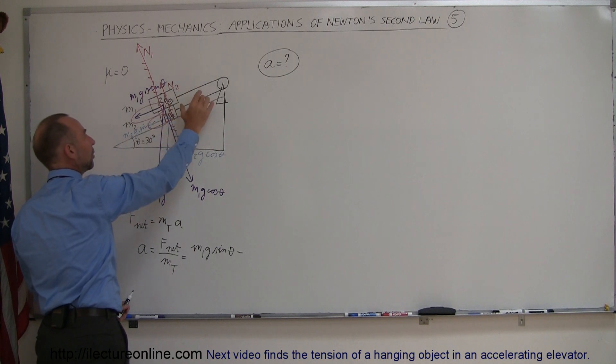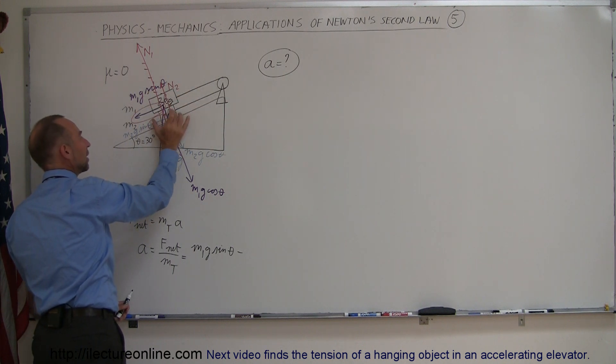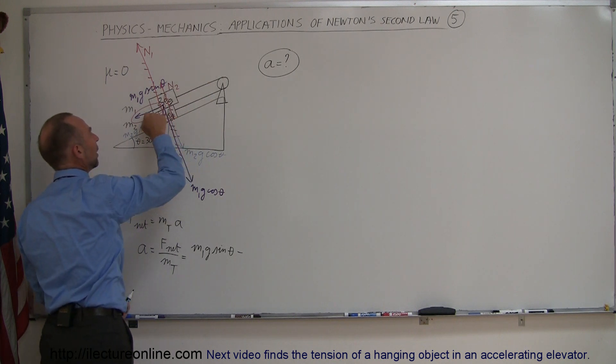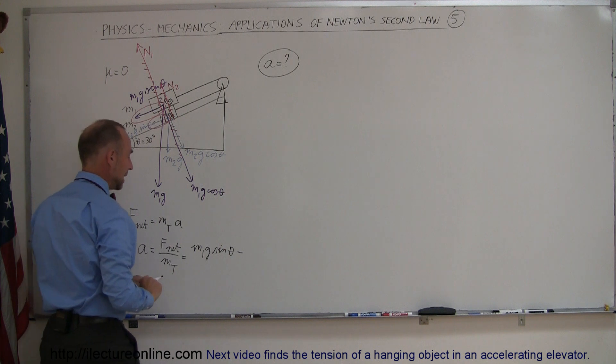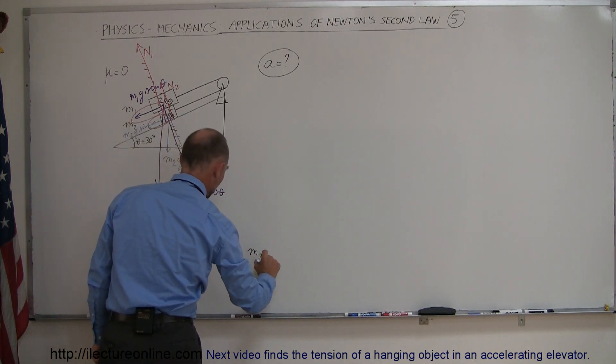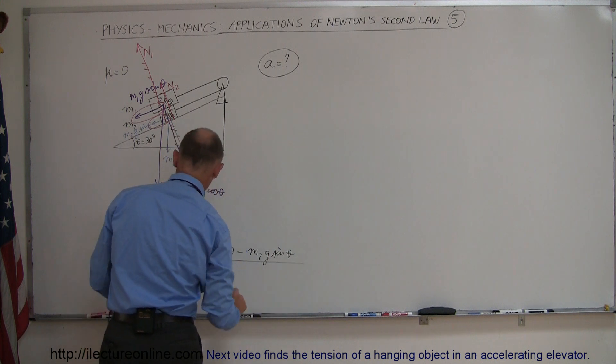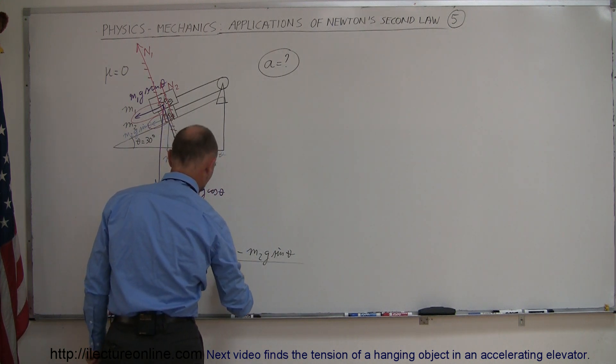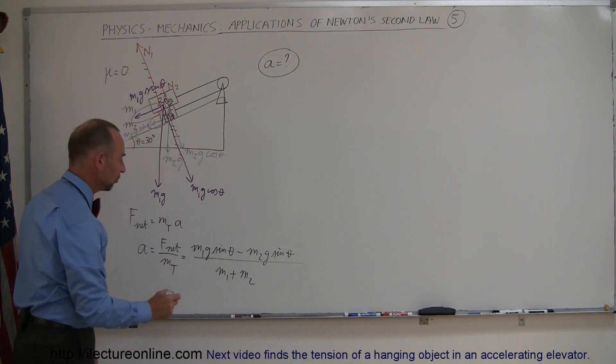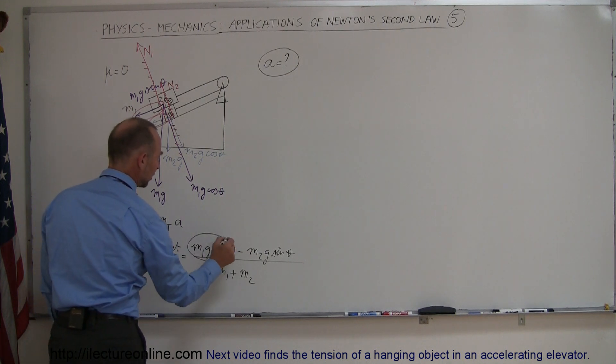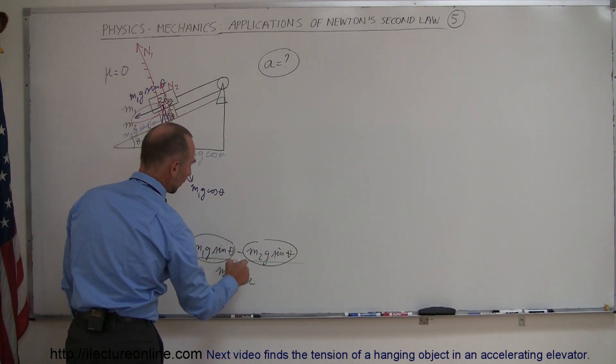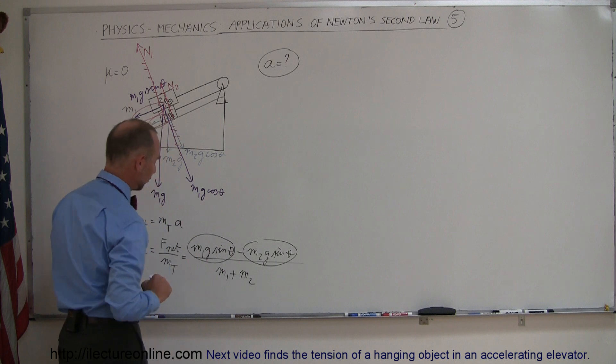Minus all the forces opposing the acceleration that's this one right here because notice this one will actually try to pull this mass upward by the weight of this one right here so this one wants to slide this way pulls on the string tries to pull this one up but this one is bigger this one will pull this way pulling that one up in the end. So this will be m2g sine of theta divided by the total mass which would be m1 plus m2. All right so this one aids in the acceleration this one opposes acceleration that makes it a plus and a minus force.